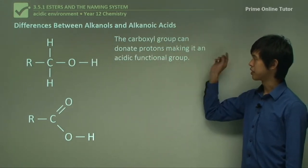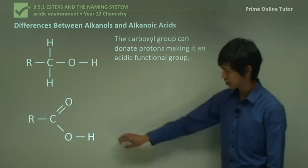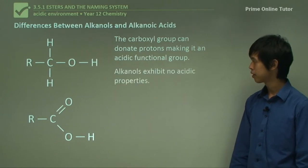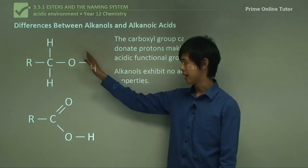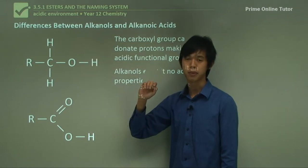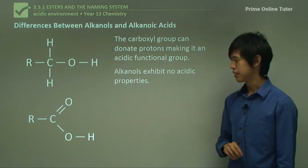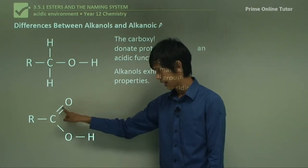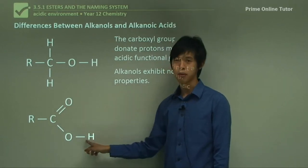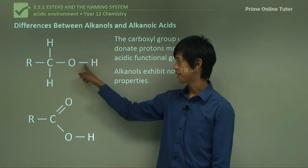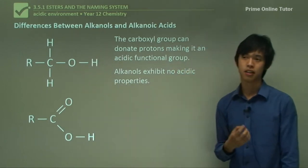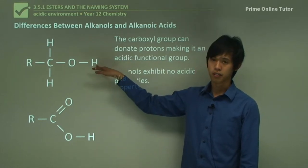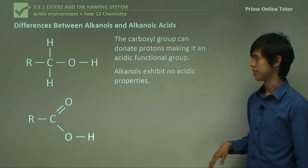The carboxyl group can donate protons, making it an acidic functional group. This can actually go away, be added to solution, and become an acid. Whereas alkanols, this can't actually be donated. The reason is because the electron bond here actually kind of resonates. It can be here sometimes and it can be here, which makes this bond very weak. Whereas this one, the bond can only be in one place, so it makes the bond slightly stronger. That's why this group can donate hydrogen whereas this group cannot.